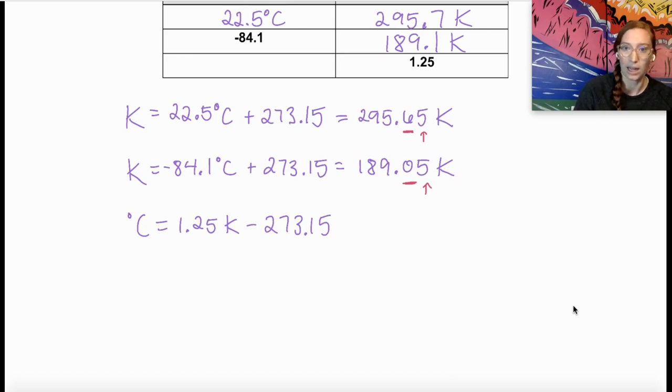Plug that in and I get negative 271.9 in my calculator. But that's only one decimal place. I want to make sure that that has my two decimal places that I need. I'm going to make this negative 271.90 degrees Celsius.